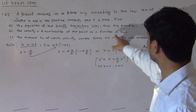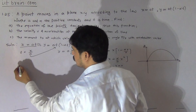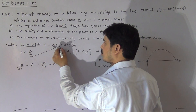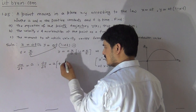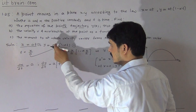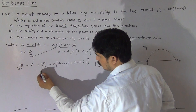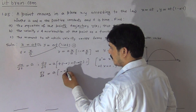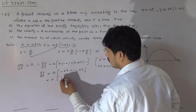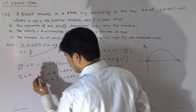Now the second part: velocity and acceleration of the point as a function of time. For getting the velocity, differentiate the first and second equations with respect to time. We get dx/dt equal to a. For dy/dt, we apply the product rule to at(1 minus alpha t). A is a constant. Applying the product rule between t and (1 minus alpha t), we get dy/dt equal to a(1 minus alpha t) plus at(minus alpha), which simplifies to a(1 minus 2 alpha t). So dx/dt is the x-component of velocity and dy/dt is the y-component.